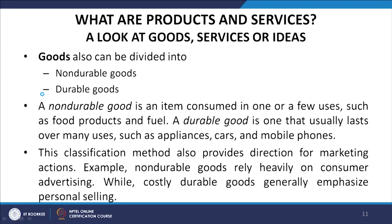On one hand, every good has tangible and intangible attributes. On the other hand, goods can be divided into non-durable and durable goods. A non-durable good is an item consumed in one or a few uses, such as food products and fuel, while a durable good is one that usually lasts over many years, such as appliances like refrigerators and washing machines, cars, and mobile phones.